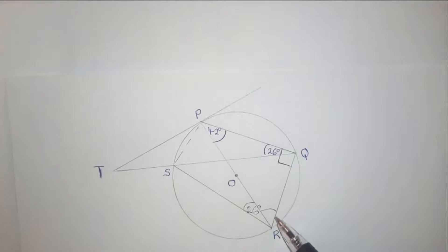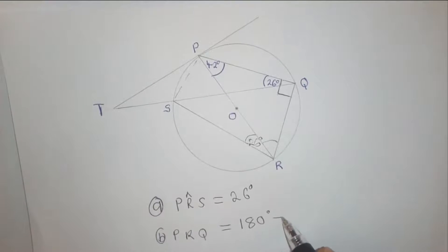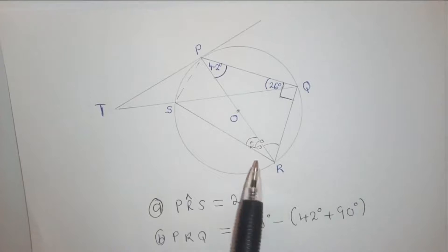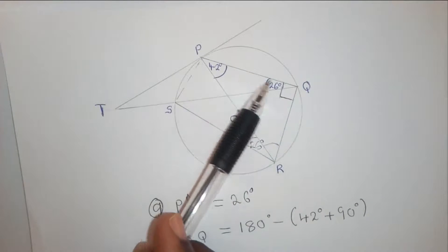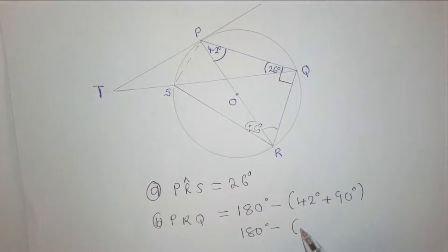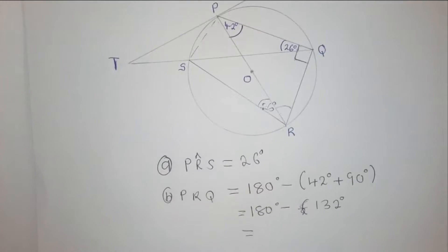Since we have 90 degrees and 42 degrees in the triangle, we use the property that the sum of angles in a triangle equals 180 degrees. So we calculate: 180 minus (42 plus 90) = 180 minus 132 = 48 degrees. Our answer for part B is 48 degrees.